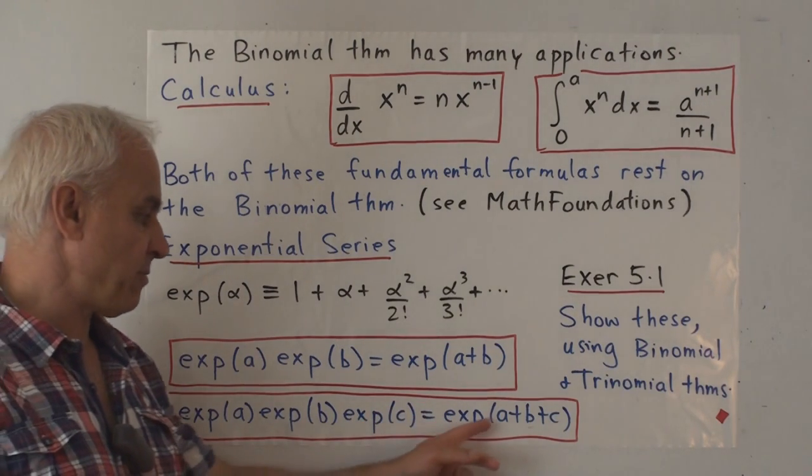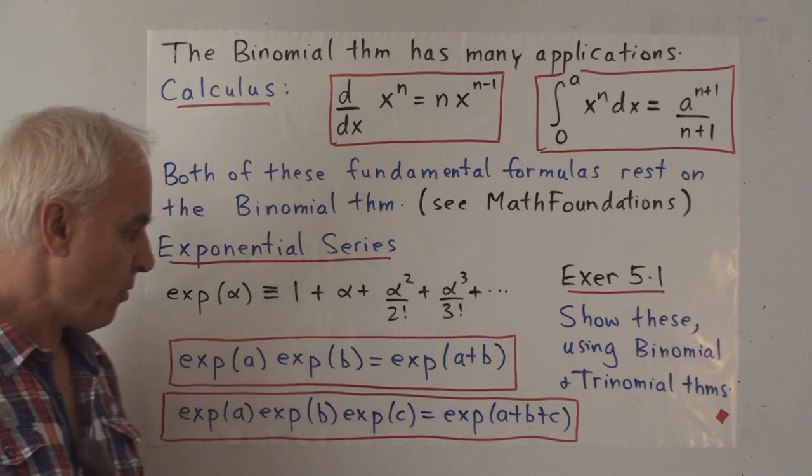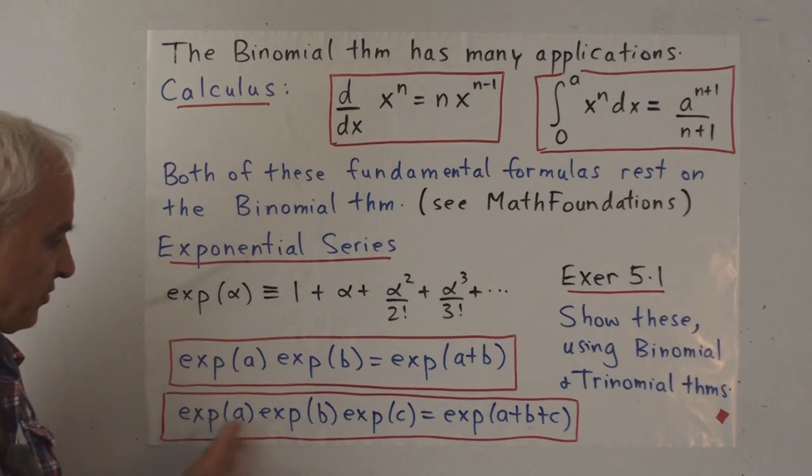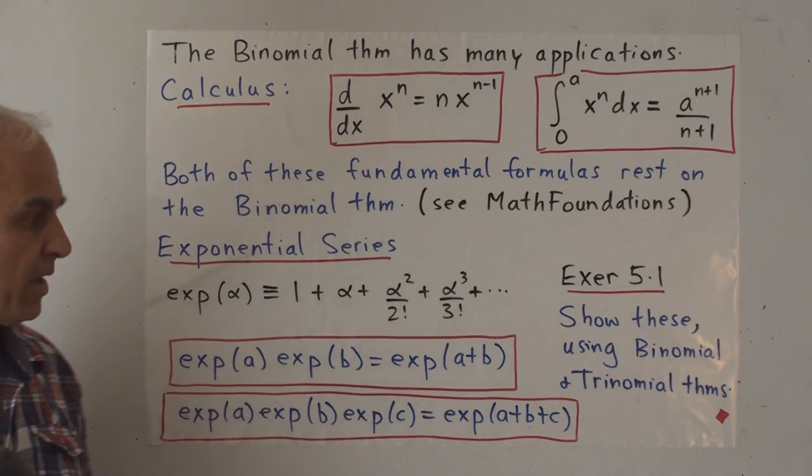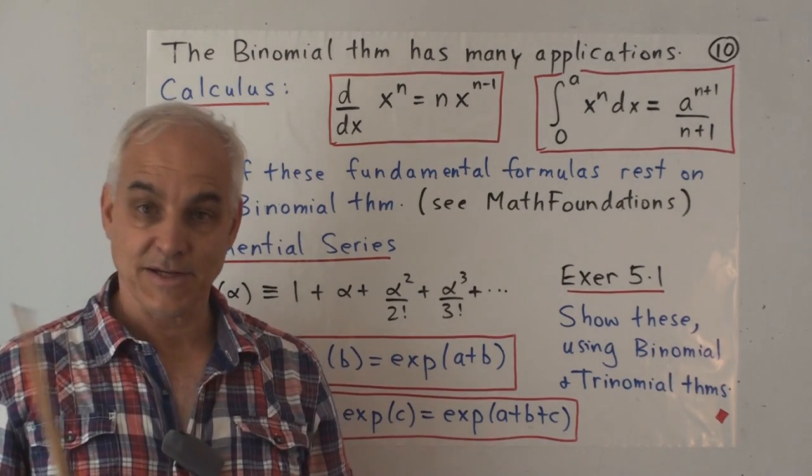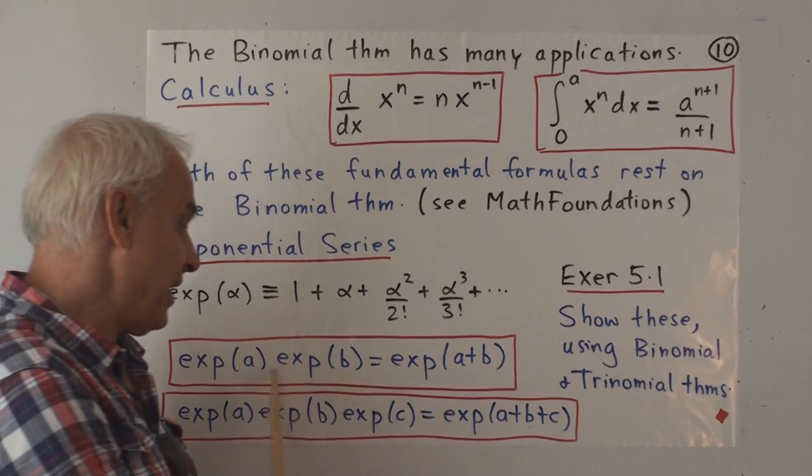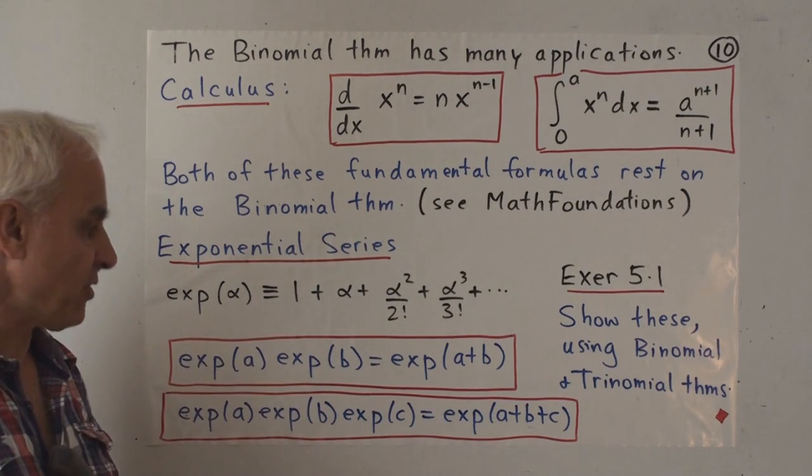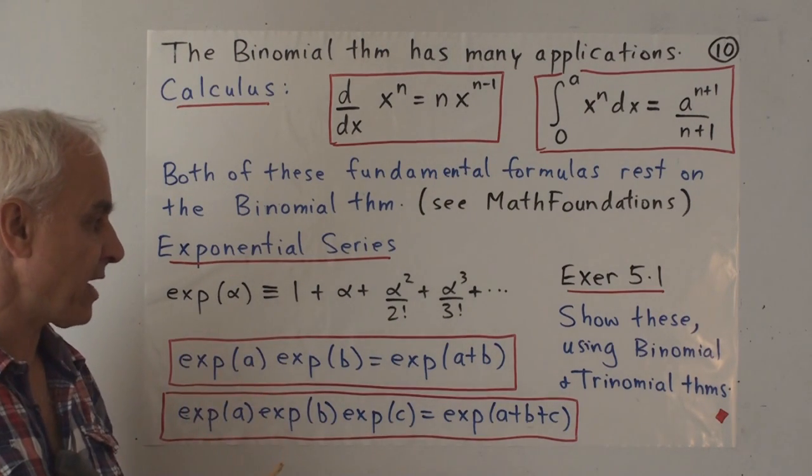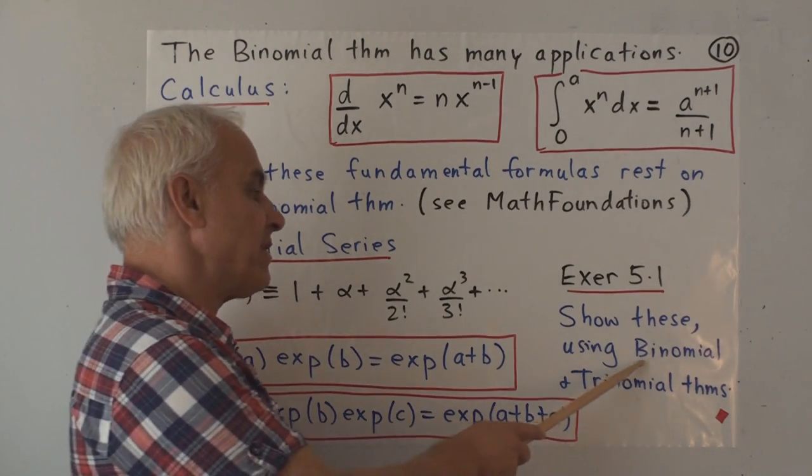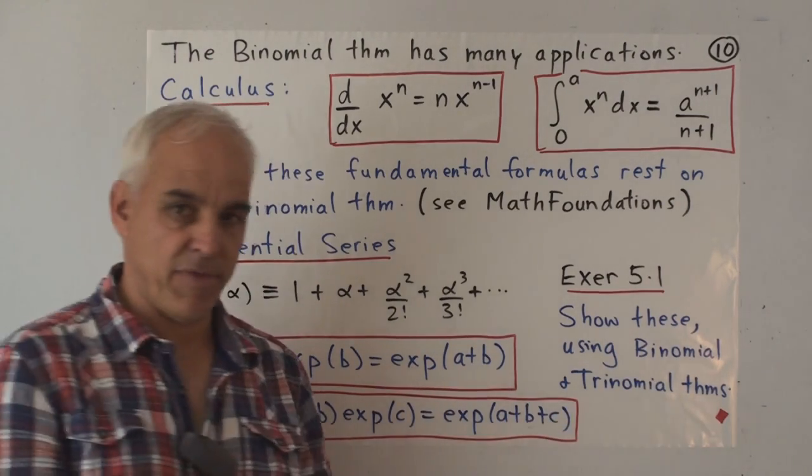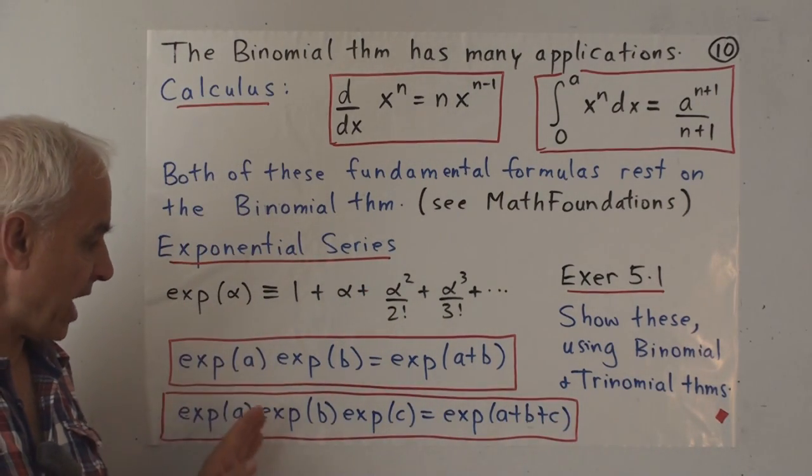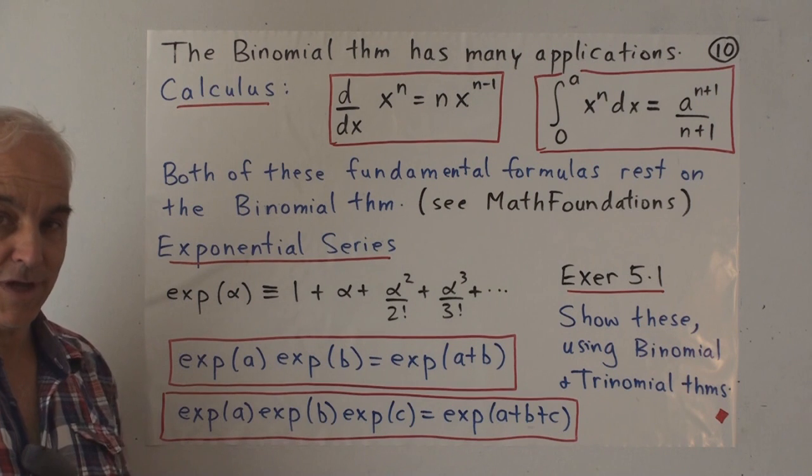And there's a souped up version which is also interesting and less studied that exp(a) exp(b) exp(c) equals similarly exp(a+b+c). Which of course is a consequence of this but it's interesting to think about it independently. So I'll leave it to you as an exercise to show that these two formulas at the level of exponential series or essentially polynomial arithmetic really are resting on the binomial and trinomial theorems. It's a very interesting and instructive and important exercise to do.